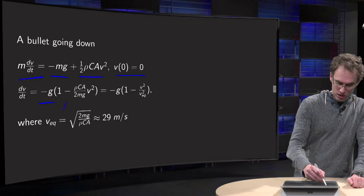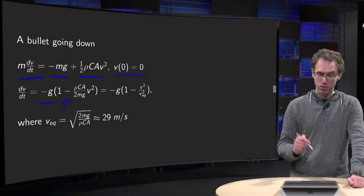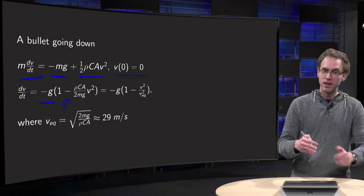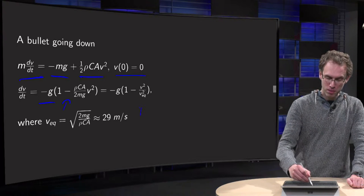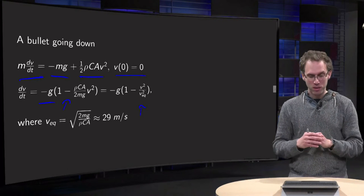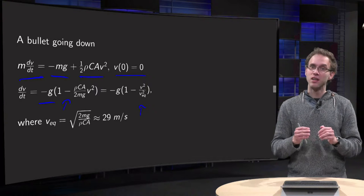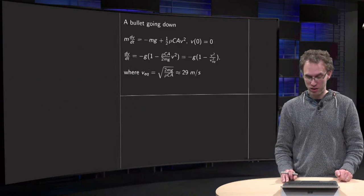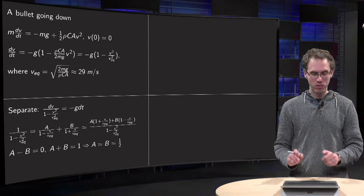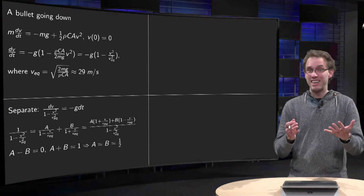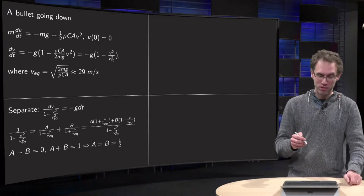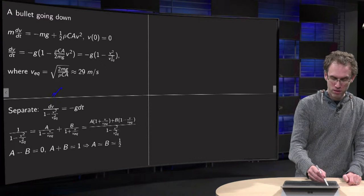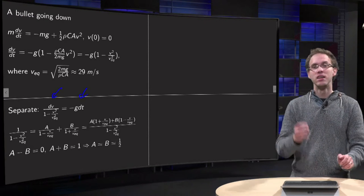Now there is a minus sign instead of a plus sign as we saw in the previous video, and we can again rewrite this in terms of v equilibrium, which is about 29 meters per second, as dv/dt equals minus g times (1 minus v squared over v equilibrium squared). We still have a separable differential equation, so we separate v's on the left and t's on the right.